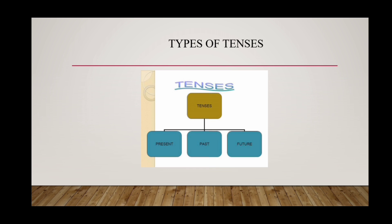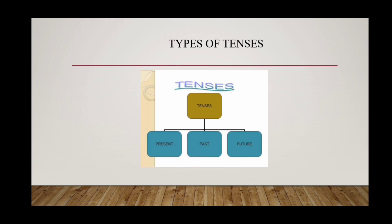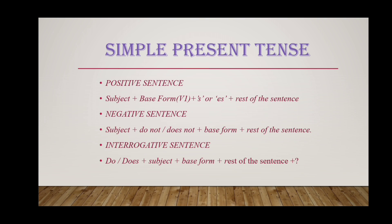The first one is simple present tense. The structure for an affirmative or positive sentence is: subject plus V1 or base form of the verb. If the subject is third person singular number, s or es is added to the verb, plus object.